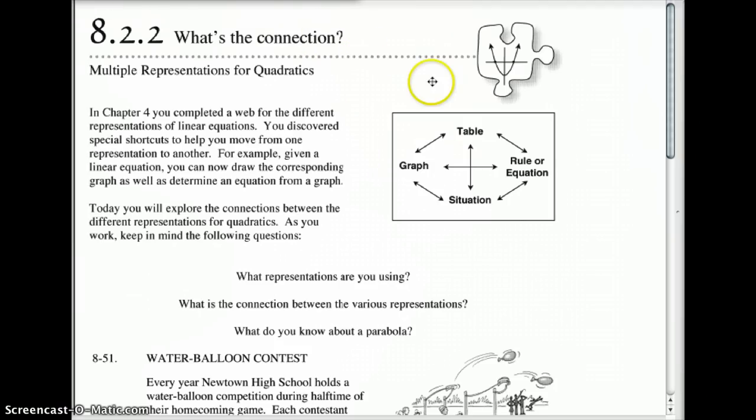Now, you probably remember from the linear lesson in chapter 4. This is called your web right here. Remember that for linear equations, we have the rule, the y equals mx plus b. From that, we could graph it, we could create a table, or we could even tell you a situation. If we had a situation, you could do the other things, or a graph, you could do all these things, or a table, you could do all these things.